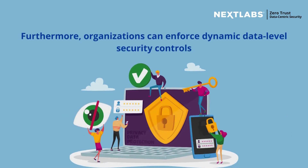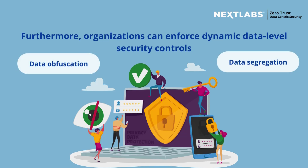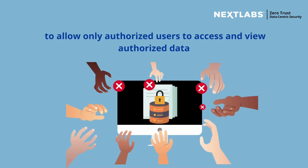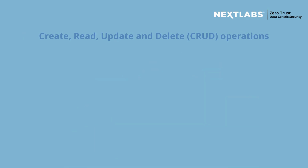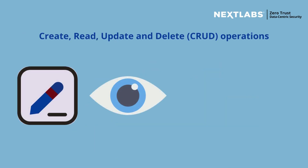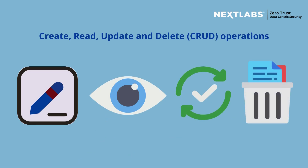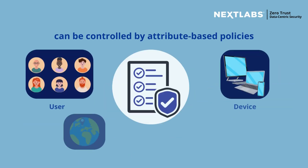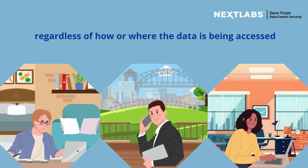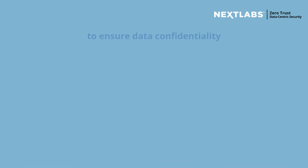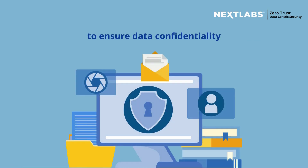Furthermore, organisations can enforce dynamic data-level security controls such as data obfuscation and segregation to allow only authorised users to access and view authorised data. Create, read, update and delete (CRUD) operations can be controlled by attribute-based policies, regardless of how or where the data is being accessed, to ensure data confidentiality.